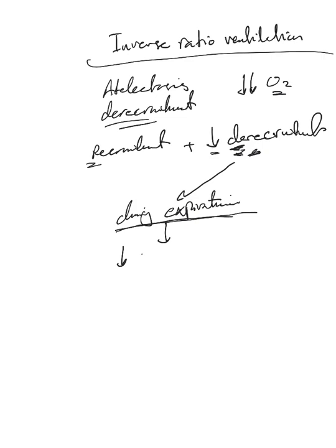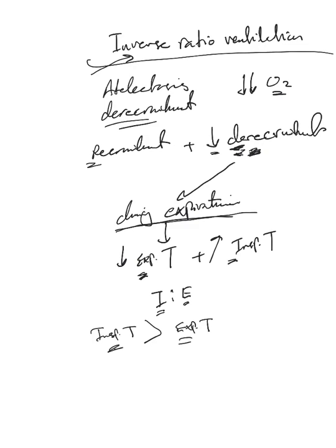One theory was, why don't we decrease expiratory time and increase inspiratory time? That way the risk of de-recruitment will be less because the expiratory time is less. That's where the idea of inverse ratio ventilation comes from. It's not a mode of ventilation, it's a strategy where you flip the I:E ratio. We always said that inspiration is shorter than expiration, but in this strategy you flip so inspiratory time you make it bigger than expiratory time.